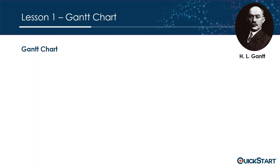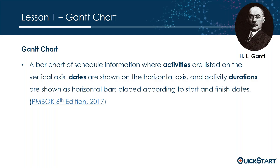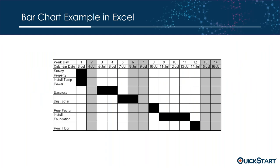Let's dive into lesson one: Gantt charts. The definition, coming directly from the Project Management Body of Knowledge sixth edition (2017), is: a bar chart of schedule information where activities are listed on the vertical axis, dates are shown on the horizontal axis, and activity durations are shown as horizontal bars placed according to their start and finish date. Key words: activities, dates, and durations.